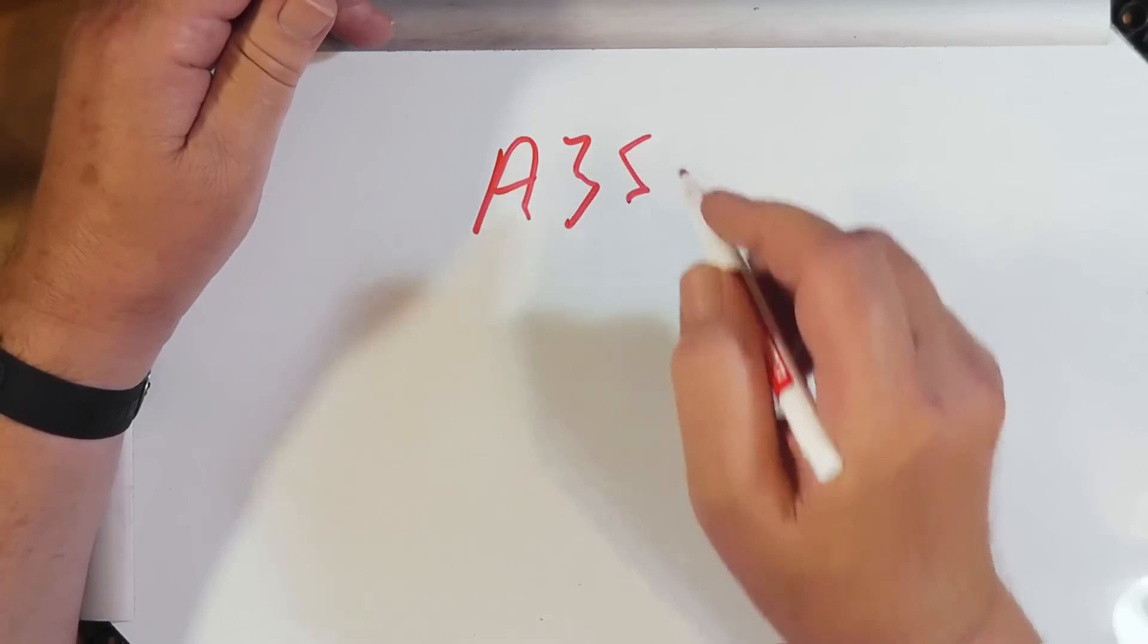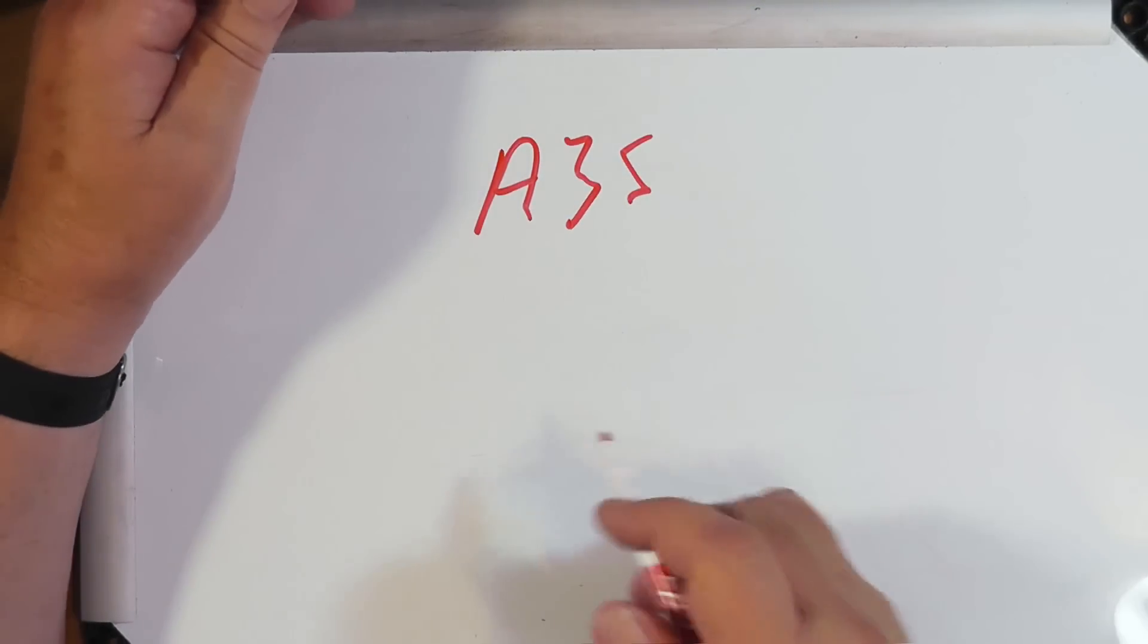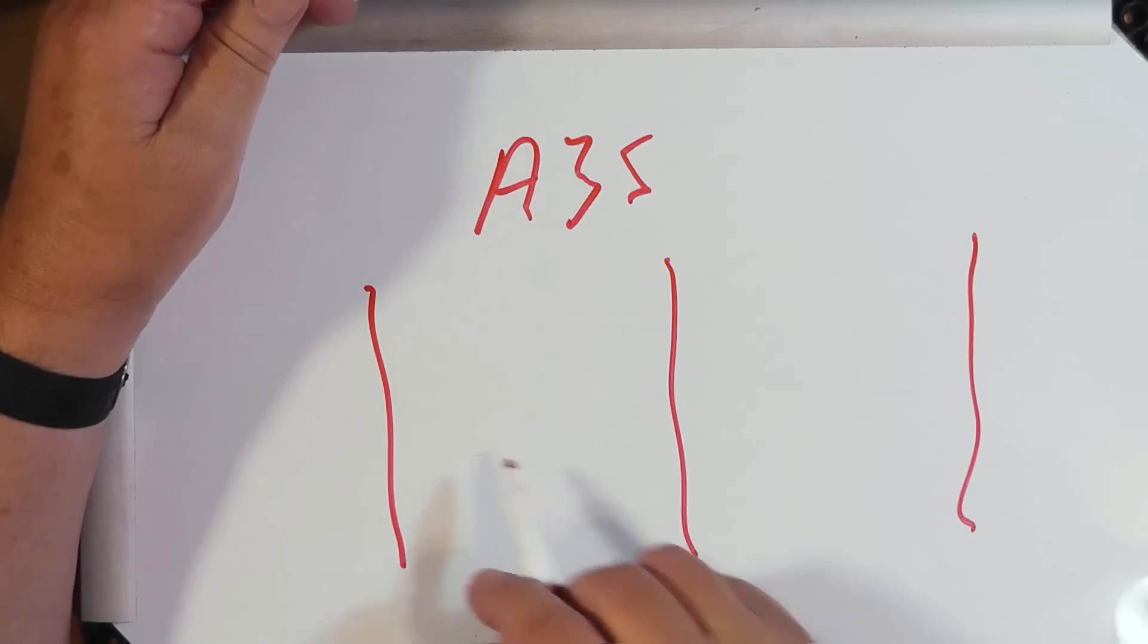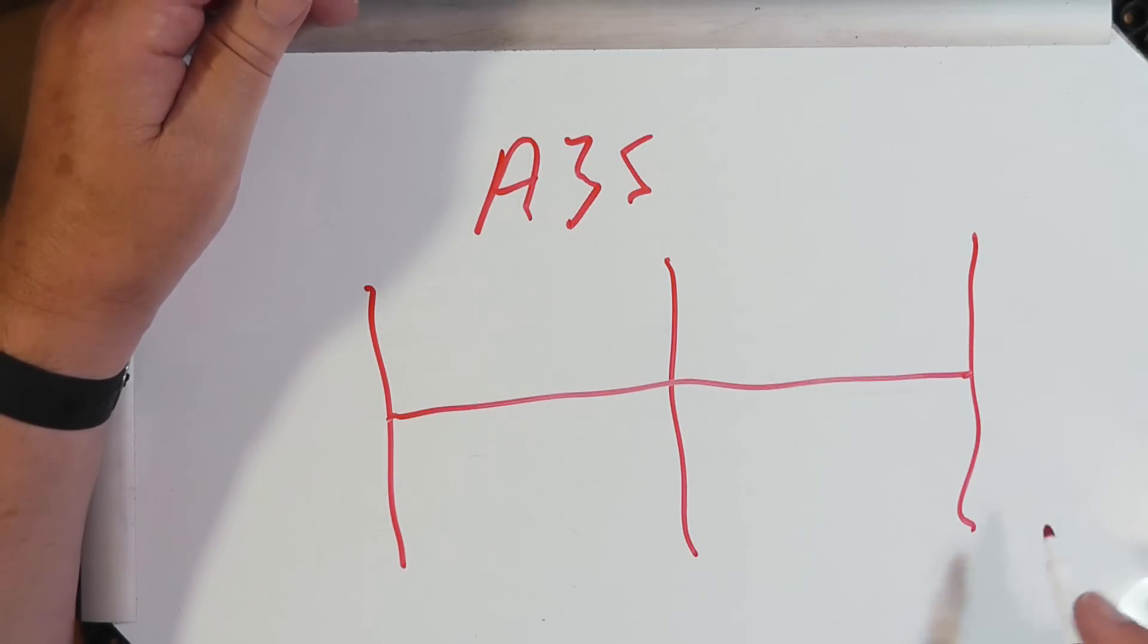Let's look at your classic Yagi. This is the old A3S by Cushcraft. It looks like this. They are equidistant, and there's a metal boom running the length of it.